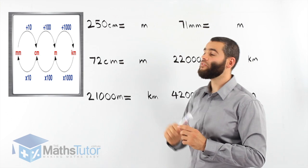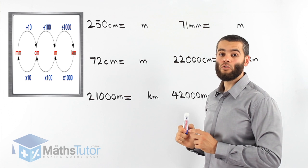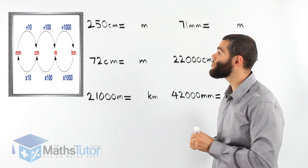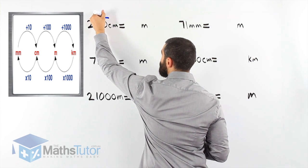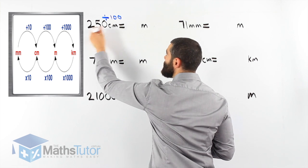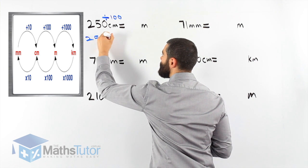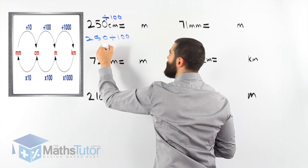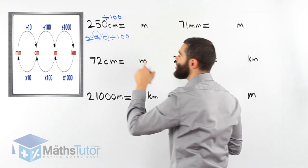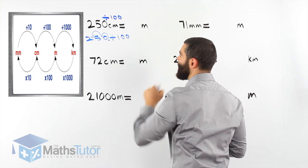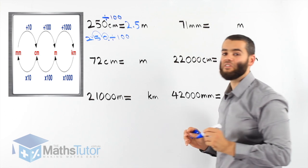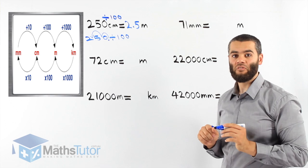250 centimetres — we're going all the way to metres. From centimetres to metres, the process says we divide by 100. 250 divided by 100: there's a point at the end, so we go backwards twice because we're dividing by 100, which has two zeros. That gives us 2.5 metres. So 250 centimetres is exactly the same as 2.5 metres.